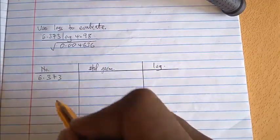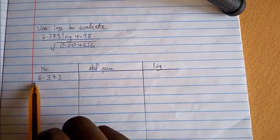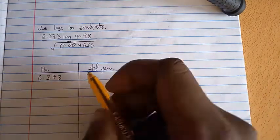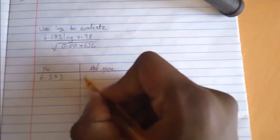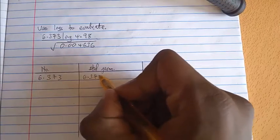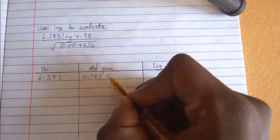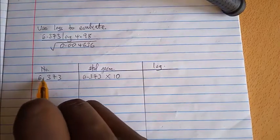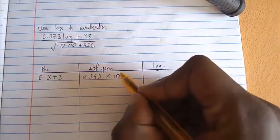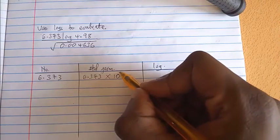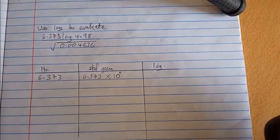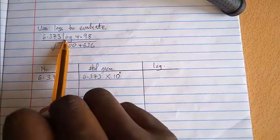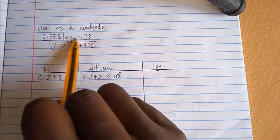Now when I write this number in standard form it will be 6.373, make sure you multiply that by 10. I haven't moved the decimal place in any direction therefore that will be times 10 raised to power 0.